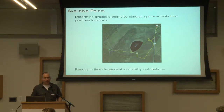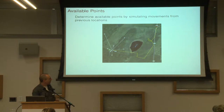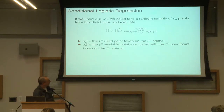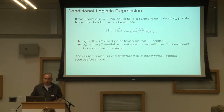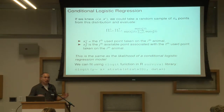So now we've got time-dependent available distributions. If we knew how an animal moved in homogeneous habitat, we could generate points and use those available points — we'd have a likelihood where you have the used locations in the numerator and the available and used locations in the denominator. This is a conditional logistic regression model. You can fit this really easily in R: in the survival library there's a CLOGIT function, and the only thing you'd have to do is include a stratum identifier that says all of these observations go together — linking each used location with all of the available locations that go with it.